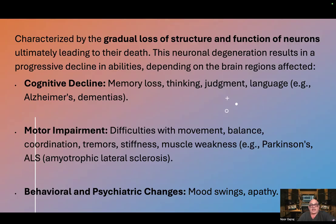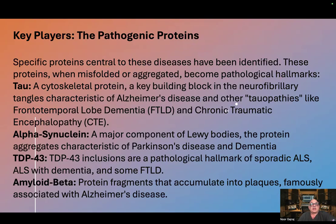Behavioral and psychiatric changes such as mood swings and apathy are also key features. The key players are the pathogenic proteins. Specific proteins central to these diseases have been identified. When misfolded or aggregated, these proteins become pathological hallmarks. Tau, a cytoskeletal protein, is a key building block in the neurofibrillary tangles.